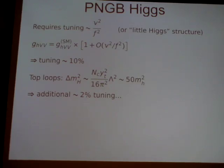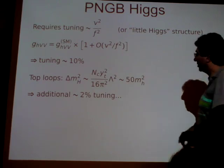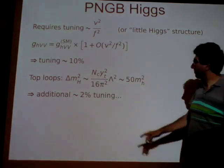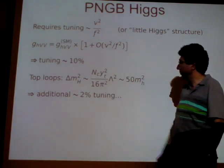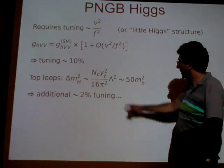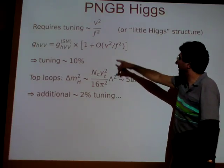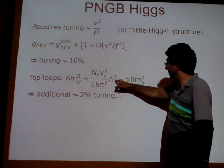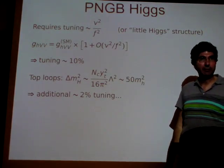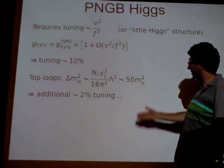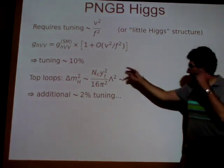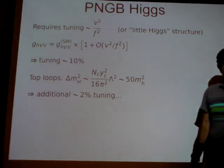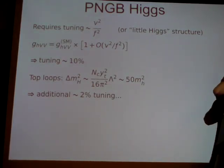10% tuning is not so bad if that were the end of it. Unfortunately, it's not quite the end of it. You also have top loops, and top loops are generally sensitive to the scale λ. The top coupling is big, so this loop suppression is not much of a suppression. The scale λ is bigger because F is about three times bigger than V, so this is about 10 TeV rather than 3 TeV — and that enhances the loop contribution. So you find that top loops give you a very large correction to the Higgs mass, requiring an additional 2% tuning or so.